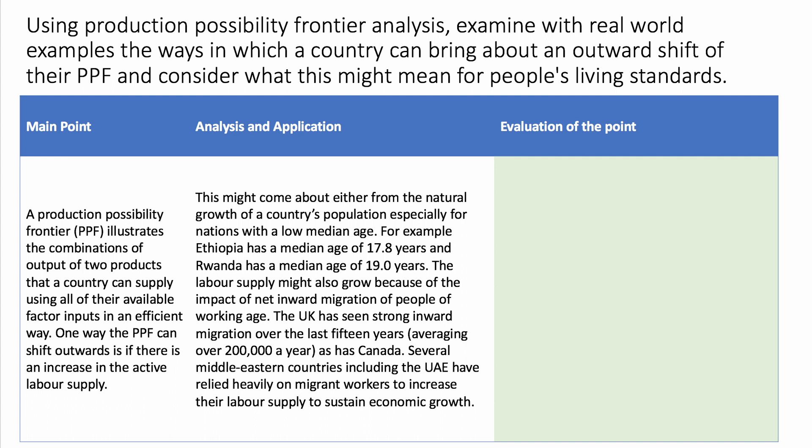Rwanda, still involved in post-genocide reconstruction but a fast-growing country, has a median age of just 19 years. Many countries have a low median age, and that can drive natural population growth. The other way the labour supply might grow is if there's a strong net inward migration of people, particularly of working age. The UK is a good example — we've seen strong inward migration over the last 15 to 20 years, averaging over 200,000 a year, though that's now coming down post-Brexit referendum. Canada and the UAE are also major recipients of migrant workers, who sustain growth by increasing labour supply.